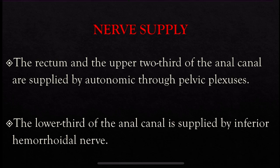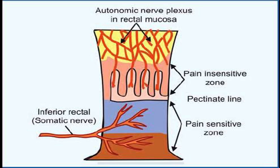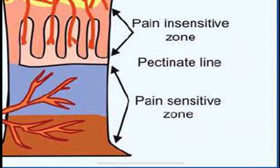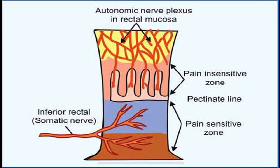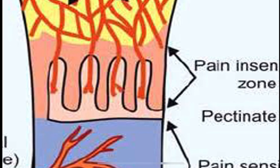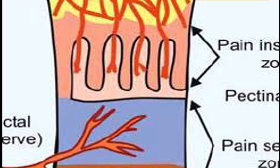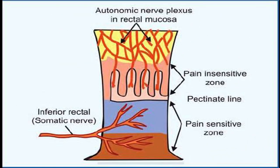Regarding nerve supply, the rectum and the upper two-thirds of the anal canal are supplied by the autonomic nerves through the pelvic plexus — this is a pain-insensitive zone. The lower third of the anal canal is supplied by the inferior hemorrhoidal nerve, which is a pain-sensitive zone. The pectinate white line is also known as Hilton's line.